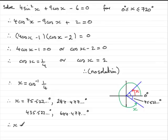Now if we give all the answers now to one decimal place as requested x would equal 75.5 degrees, 284.5 degrees, 435.5 degrees and finally 644.5 degrees. And we'll just say here that they're all to one decimal place.